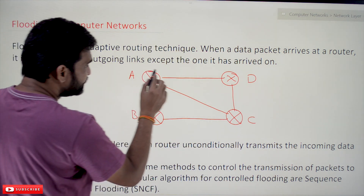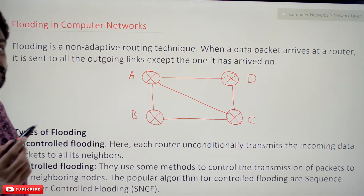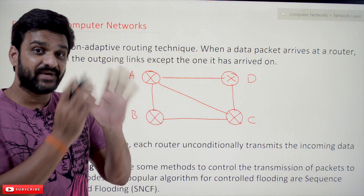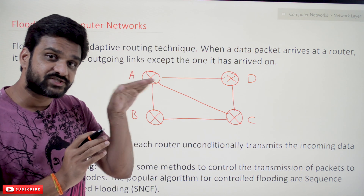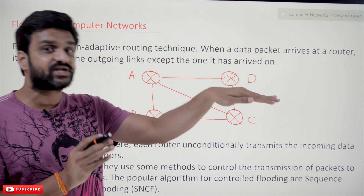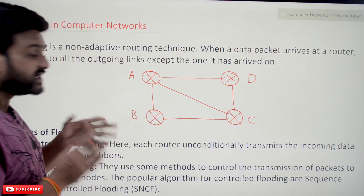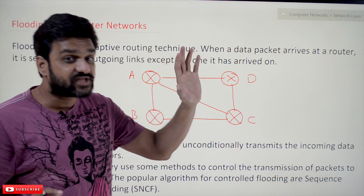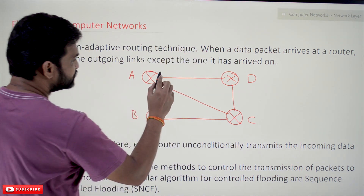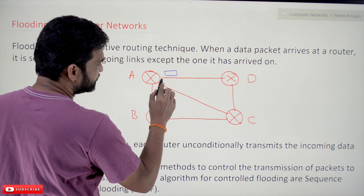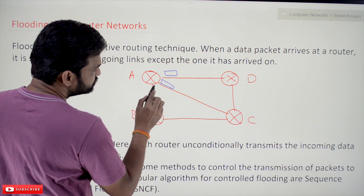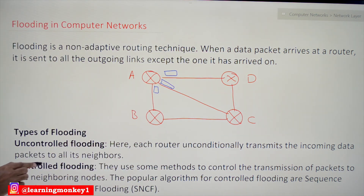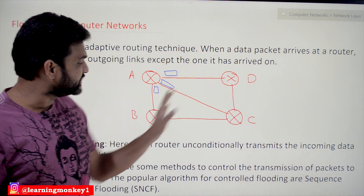Let's understand this concept using this network. If A wants to transmit data, in distance vector routing it identifies the shortest path based on the routing table and the packet is transmitted only through that interface. But in flooding, it floods the network with packets through all the interfaces to which the router is directly connected. So if A wants to send the packet, it will flood the packet through all the interfaces to which it is directly connected.